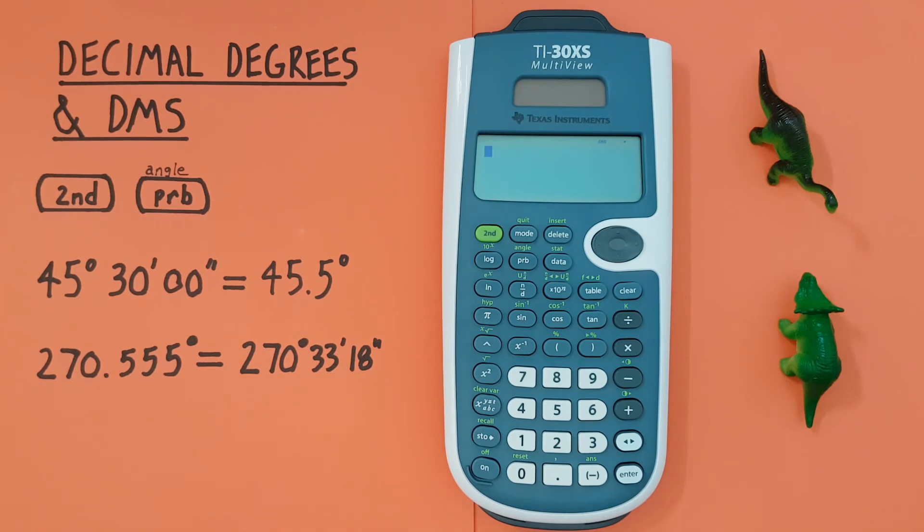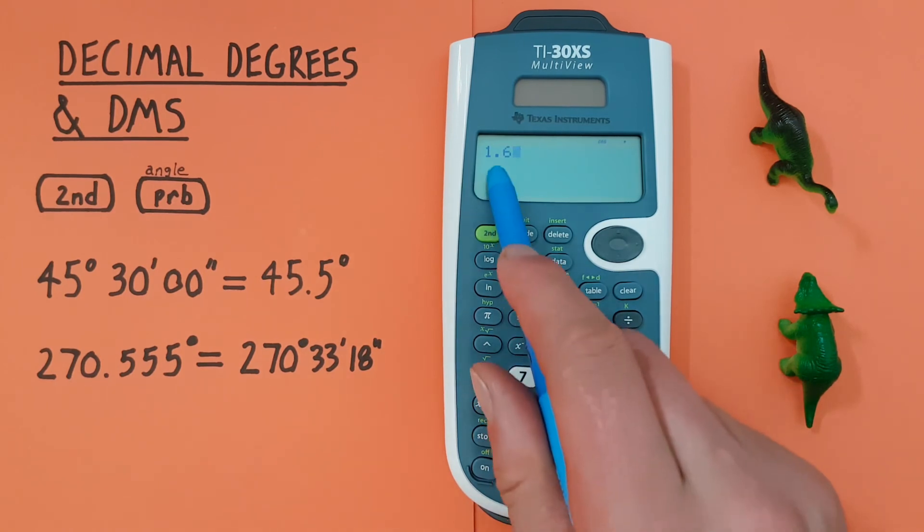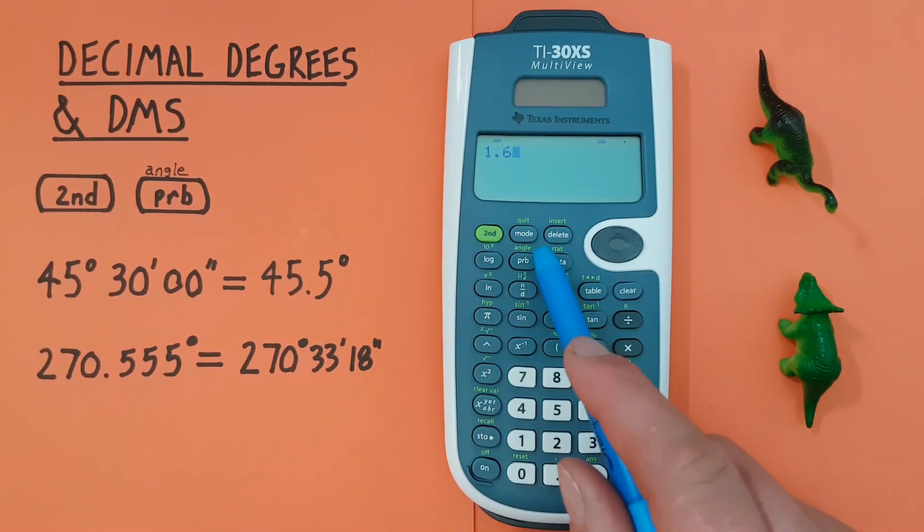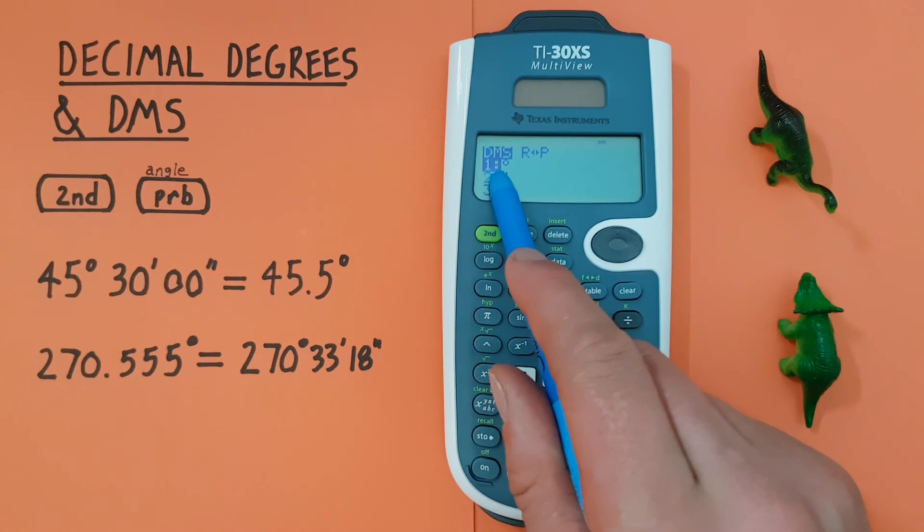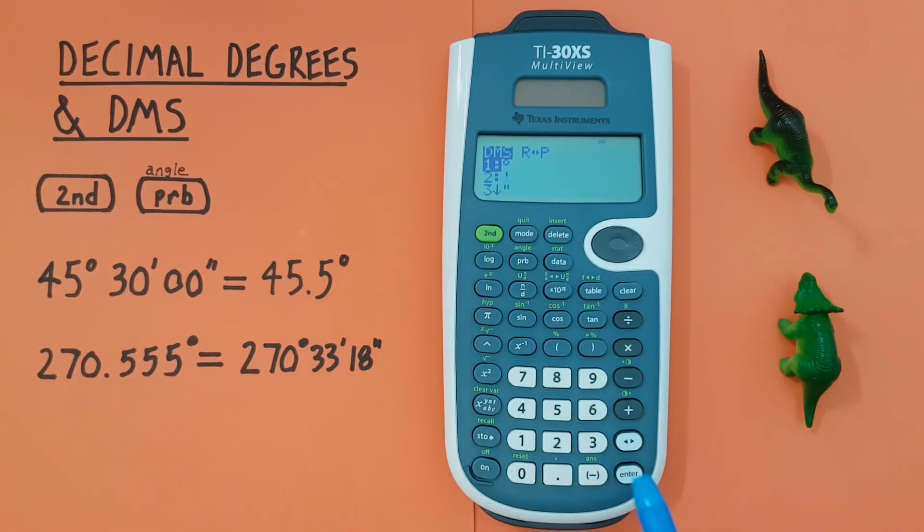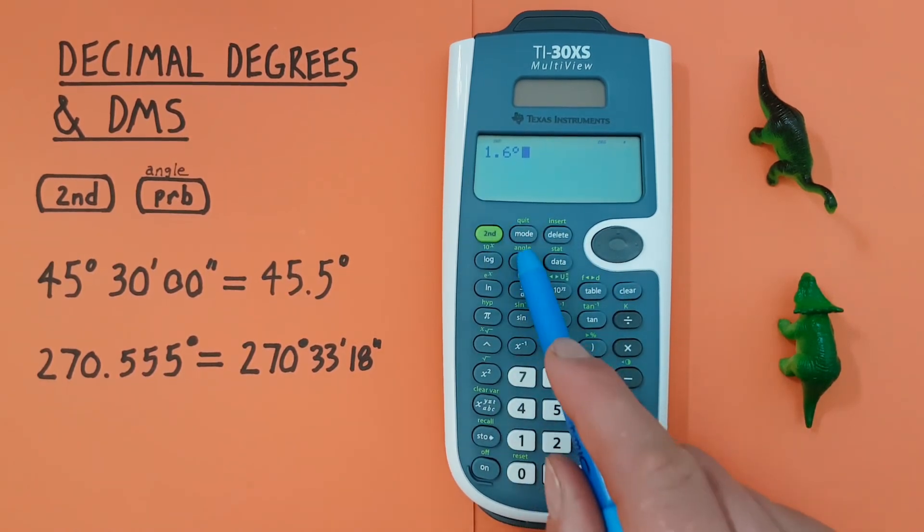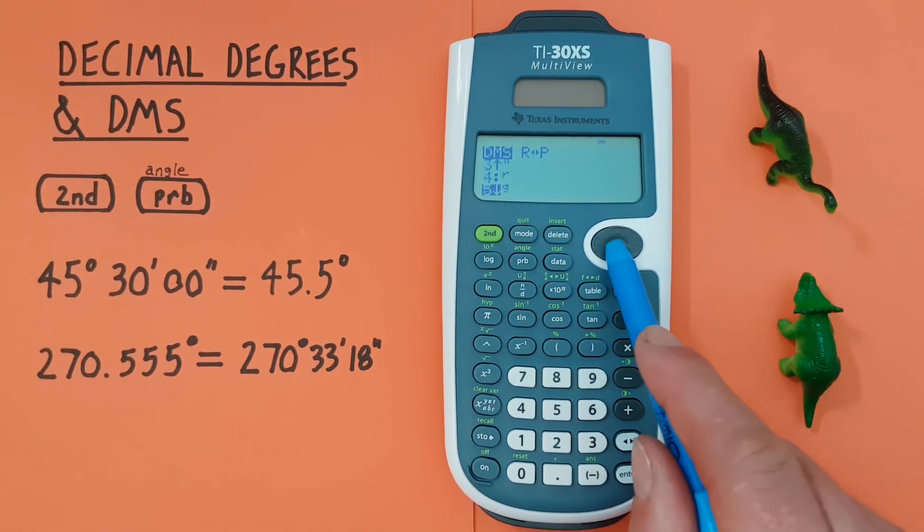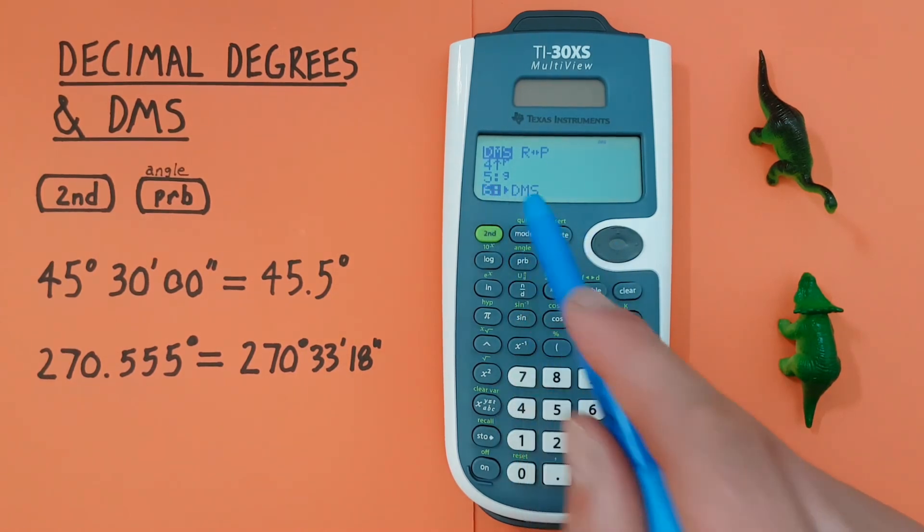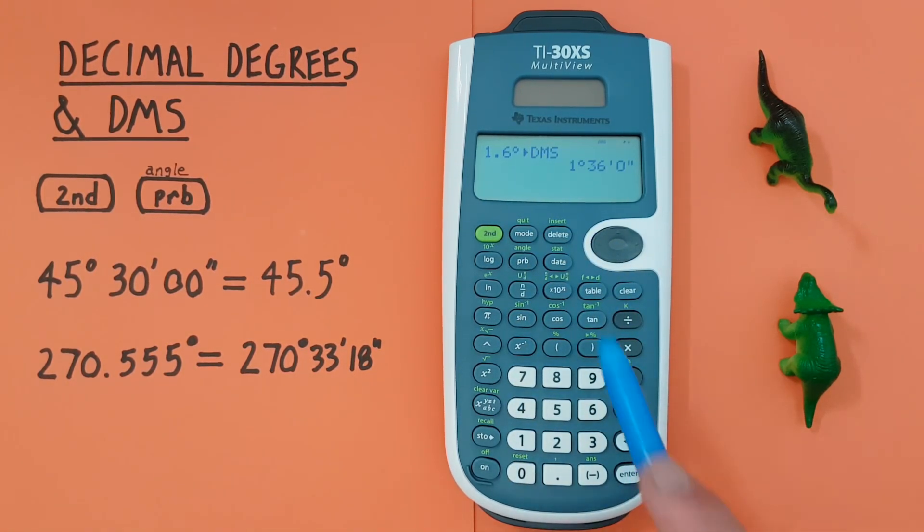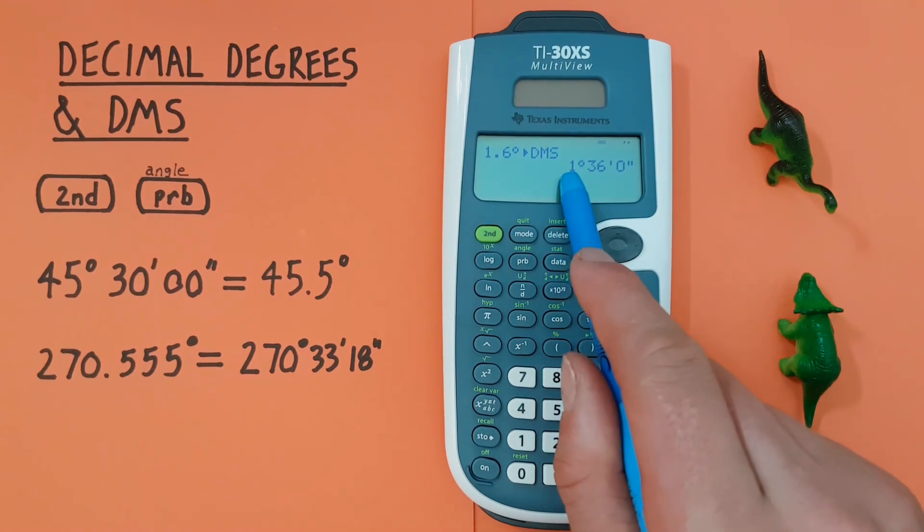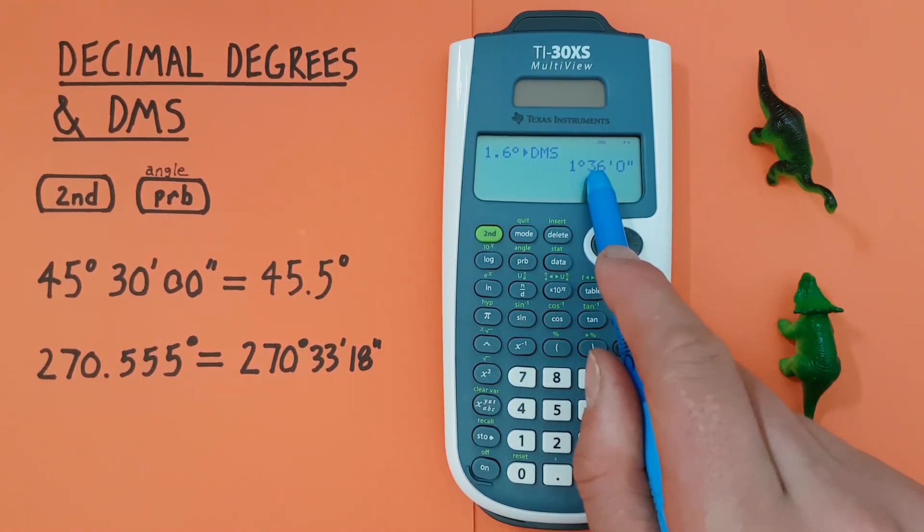This function can also be used for time. Let's say we wanted to cook something for 1.6 hours but didn't know what that was in minutes. Well to find that all we would have to do is enter our 1.6, there we go, and then convert that to degrees which will stand in for hours in this situation. So 1.6 degrees or 1.6 hours, number six into DMS, and we see that's equal to one degree or one hour 36 minutes.